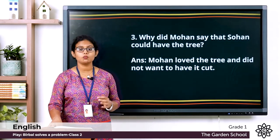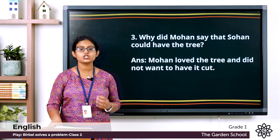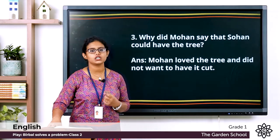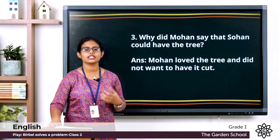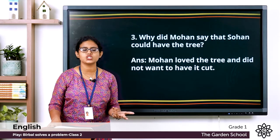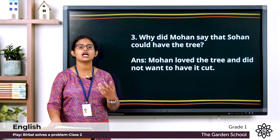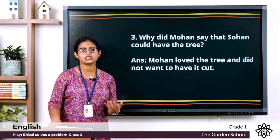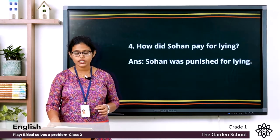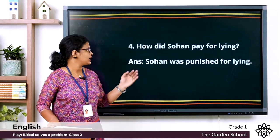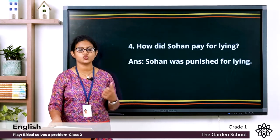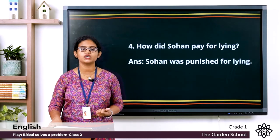Third one: Why did Mohan say that Sohen could have the tree? Mohan loved the tree and did not want it cut. So Mohan told Sohen to be the owner of the mango tree because he did not want the tree to be cut — he looked after it as his own child. Fourth one: How did Sohen pay for lying? Sohen was punished for lying. He lied that the tree belonged to him, so he was punished for lying.